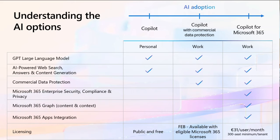In this overview you can clearly see the different functionalities. You have the publicly available Copilot for personal use, then the Copilot with Commercial Data Protection — which we're now opening to 18+ students in an education tenant from February — and then Copilot for Microsoft 365, where you get the full integration of Copilot into Microsoft 365 applications.